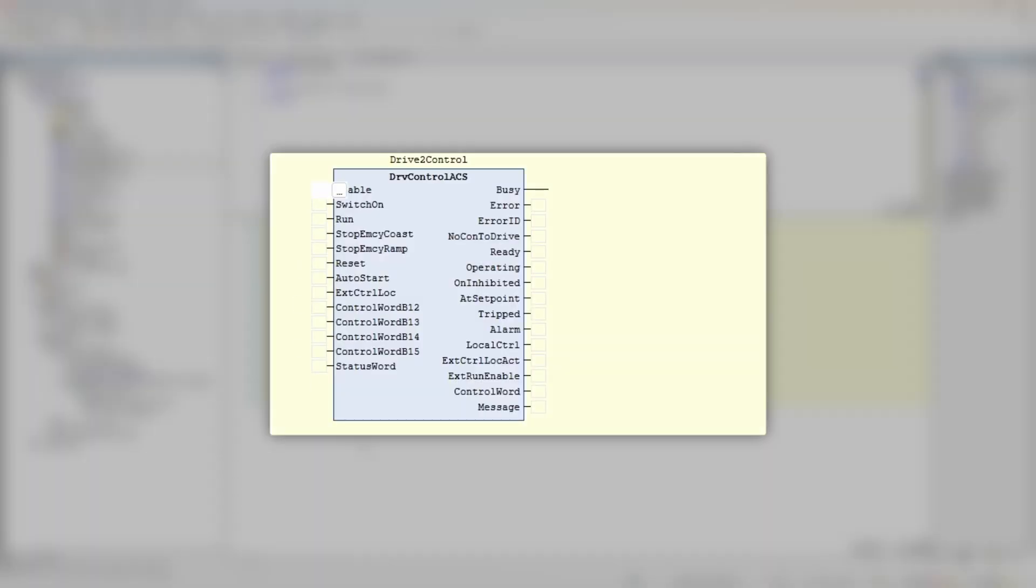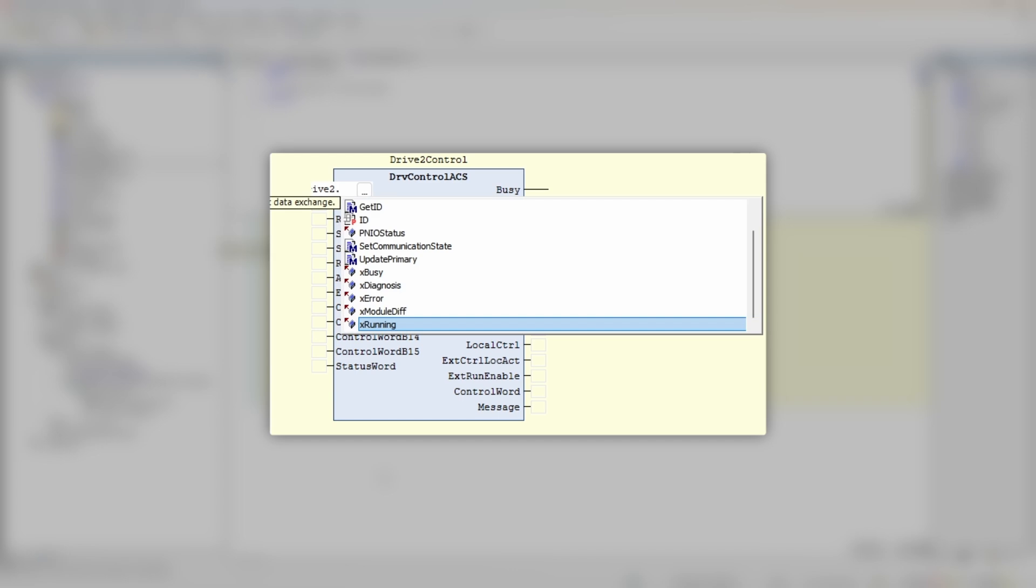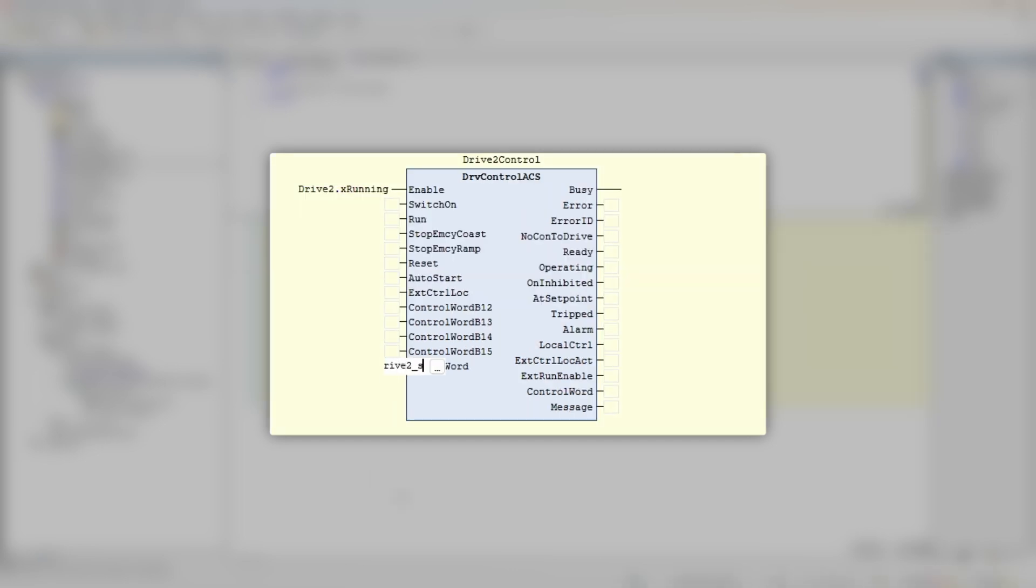Input enable makes internal logic work, so it makes sense to pass here communication status. Input status word—obviously you connect the drive status word. Output control word—here goes the drive's control word variable. Inputs switch on and run enable power electronics and put the drive into operation. Most of the time you can treat those two inputs as one run input. Inputs stop emergency coast and stop emergency ramp are normally closed and allow to implement different emergency stop modes. Input reset clears active fault output if output tripped is set to true. Output auto start basically defines if the start signal is edge or level triggered.